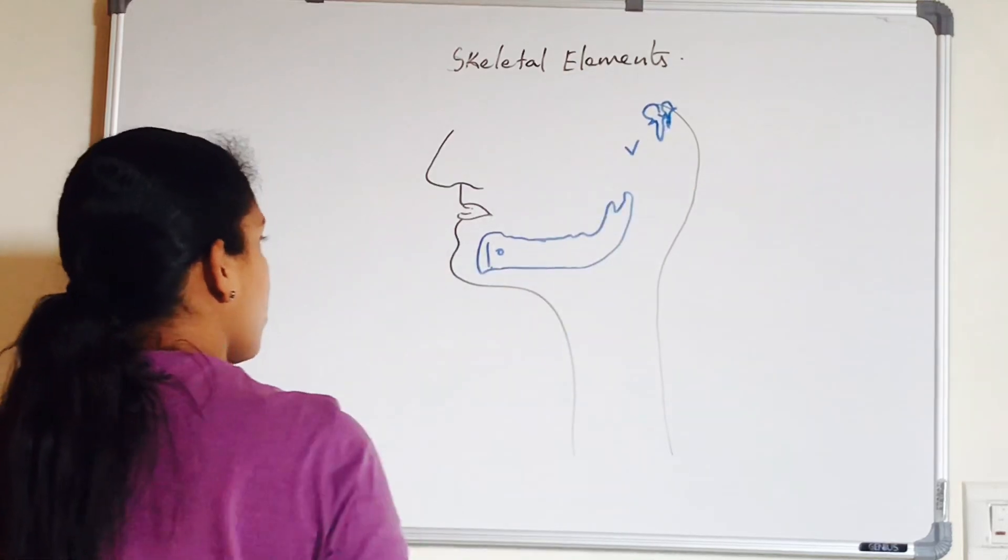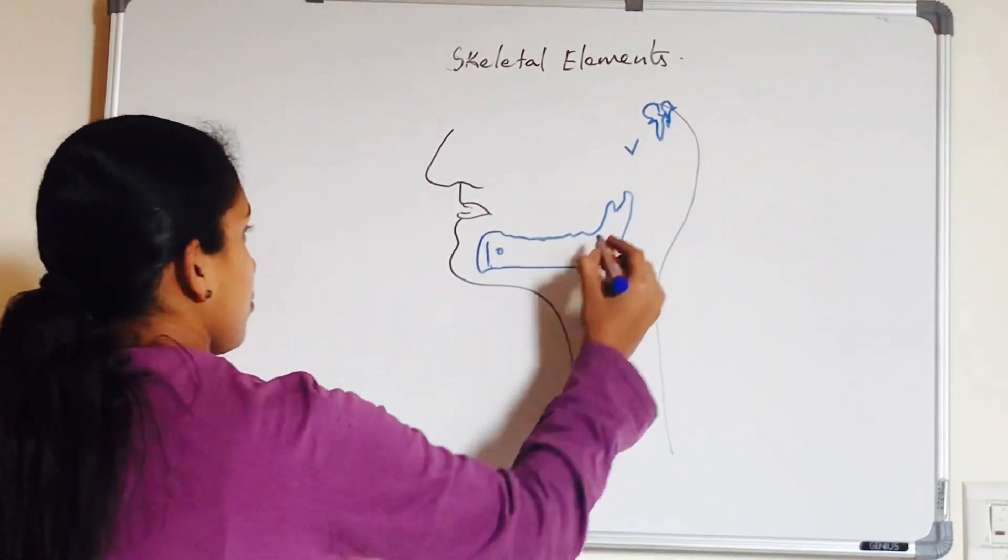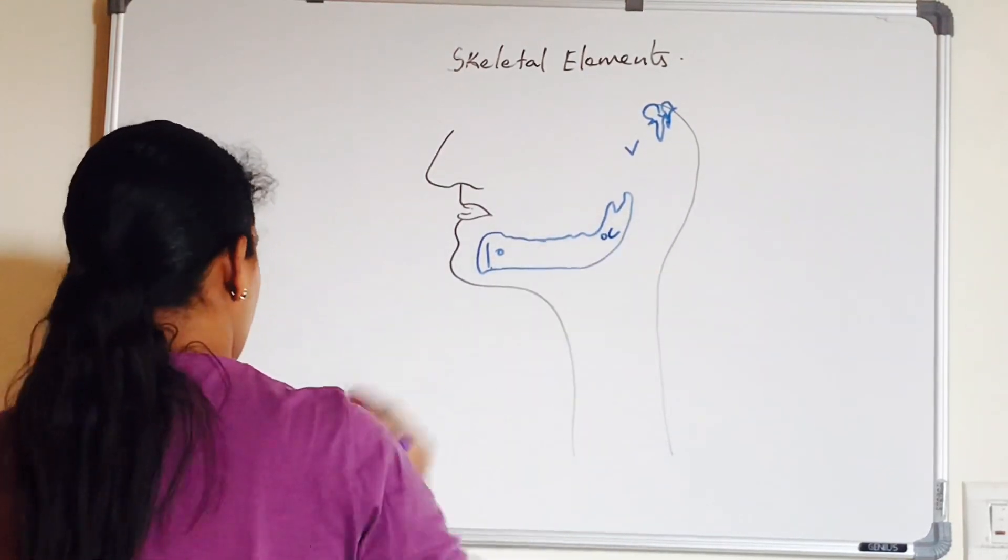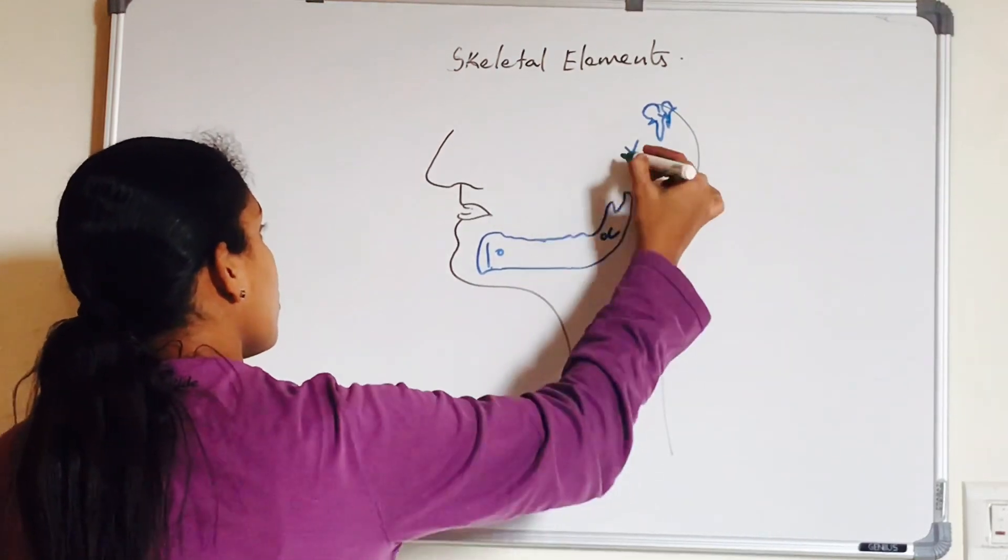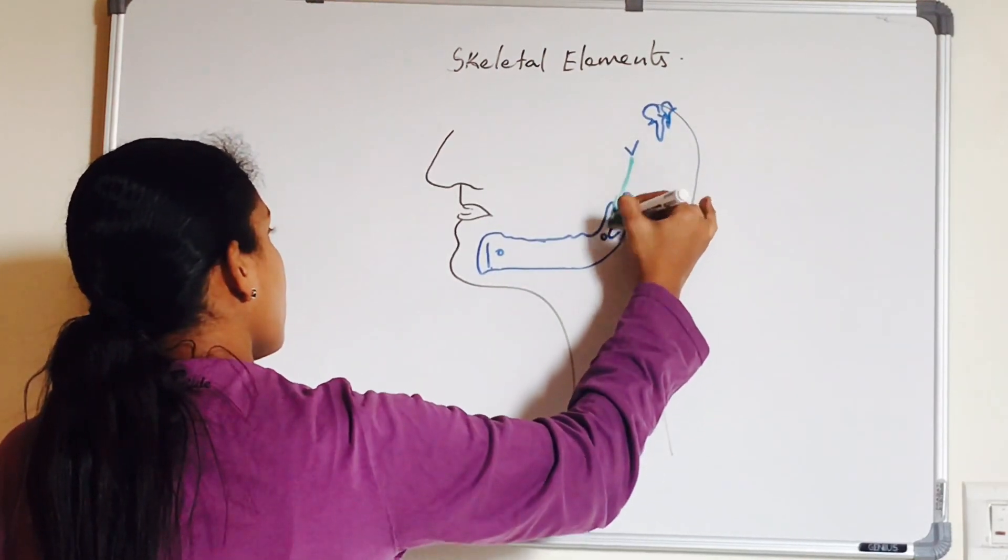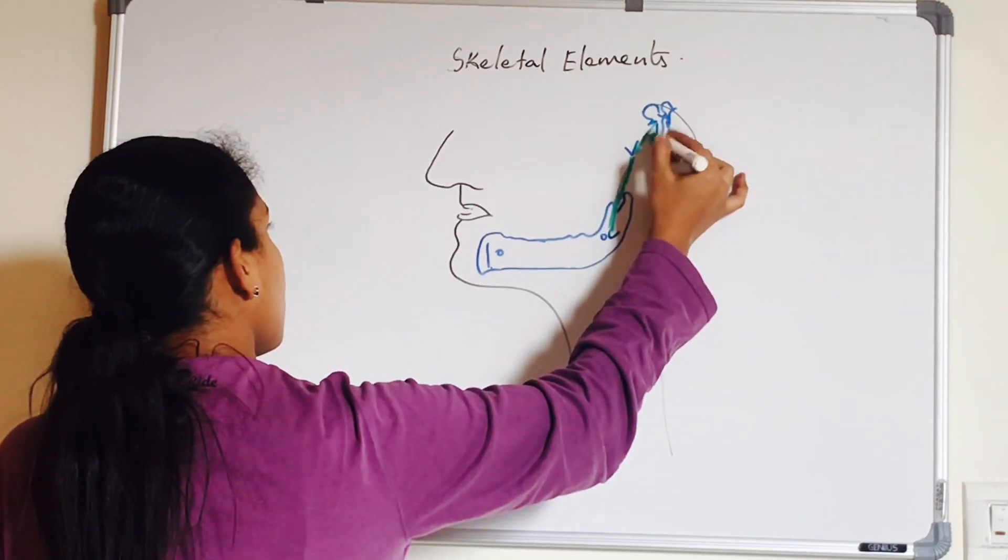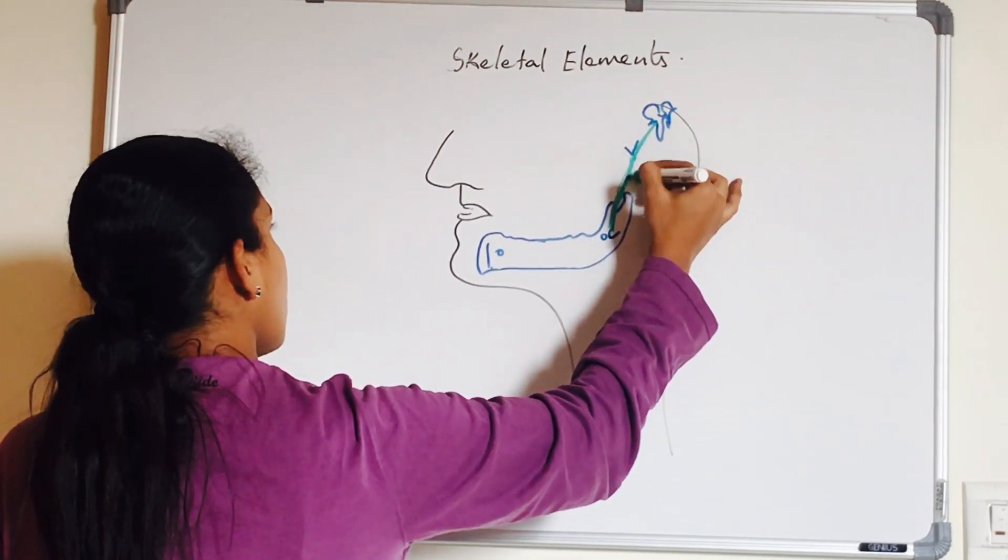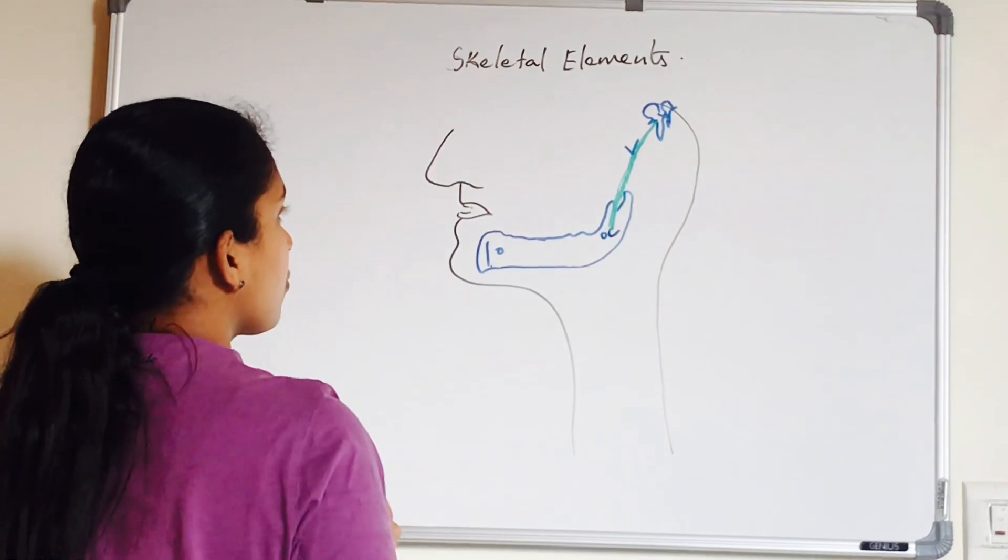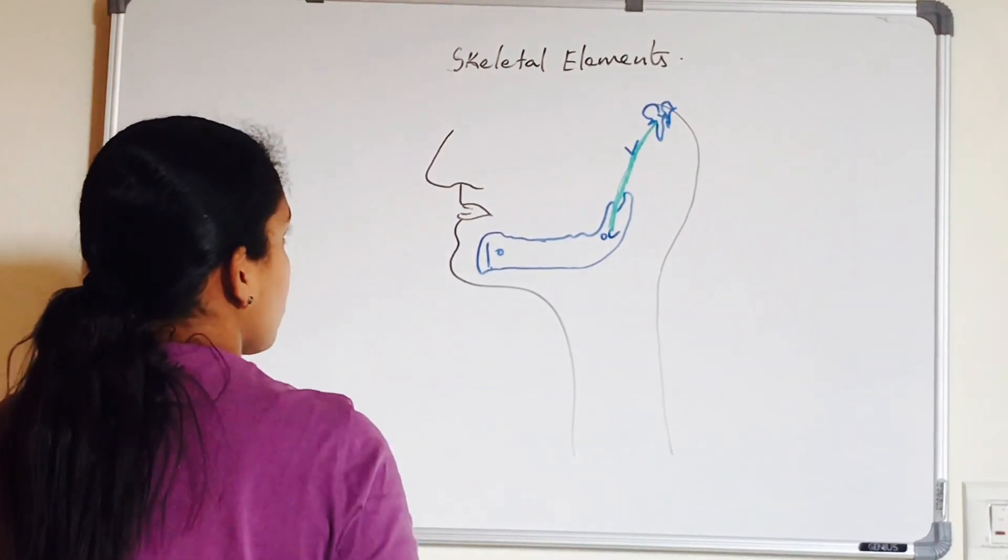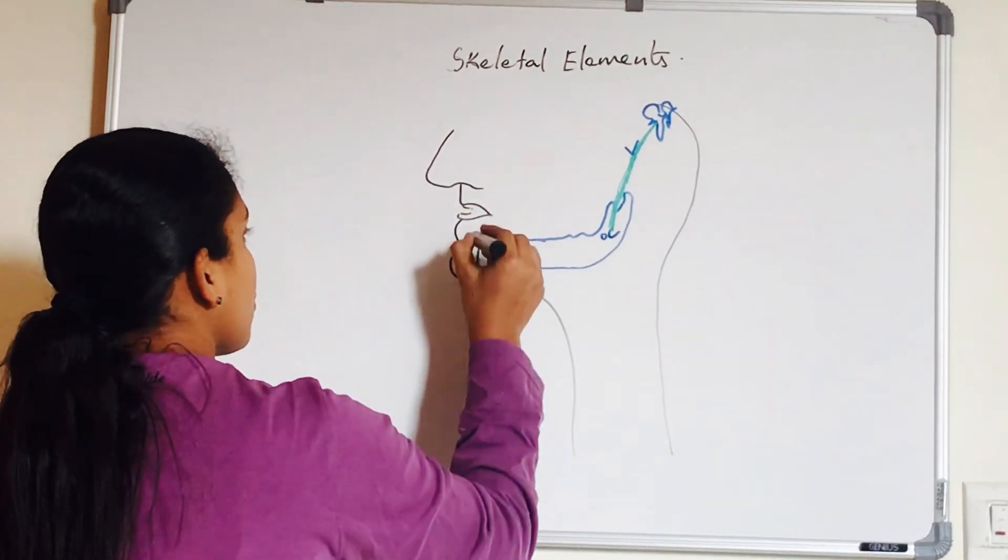The succeeding part of the cartilage, that is between the ear ossicle and the ventral part, regresses to form fibrous envelope which persists as anterior ligament of malleus and sphenomandibular ligament. The sphenomandibular ligament extends from the spine of sphenoid to the lingula of mandible.